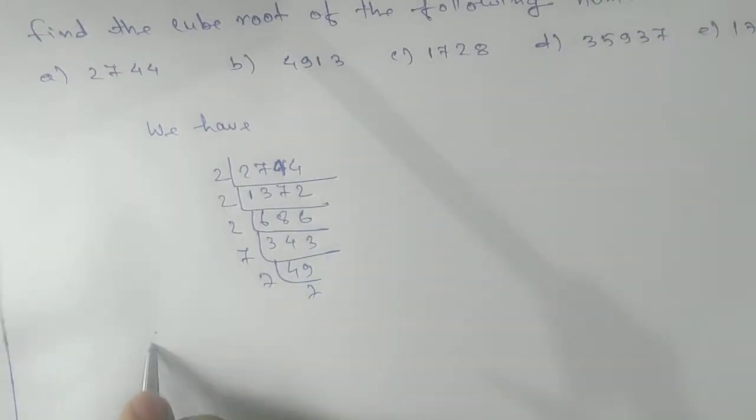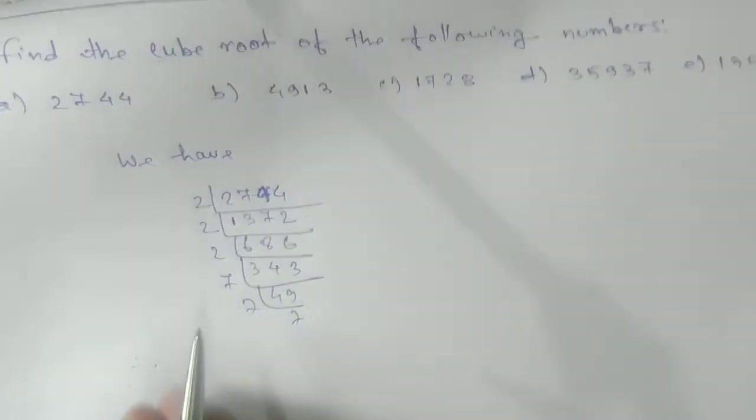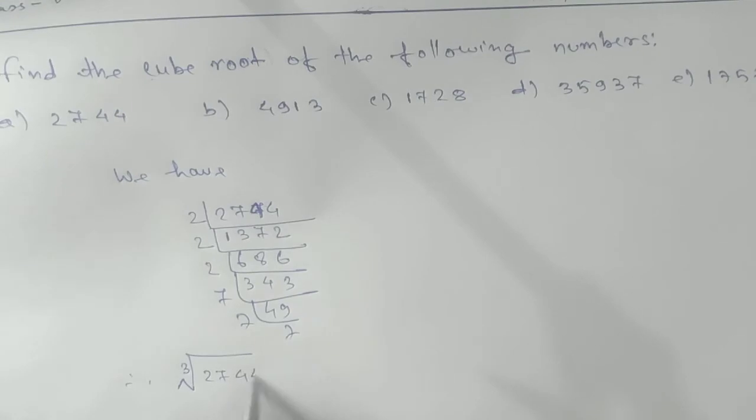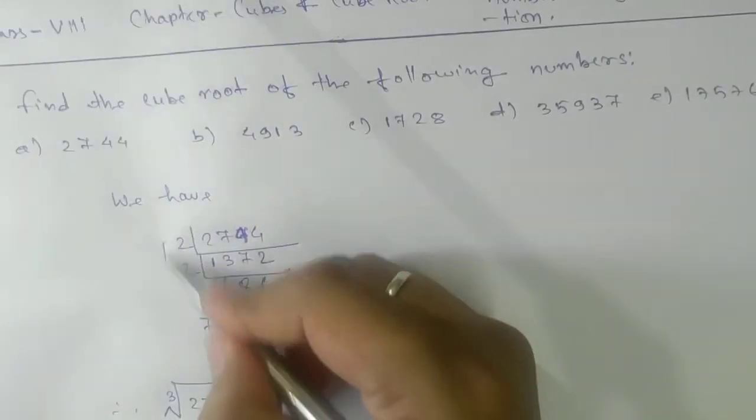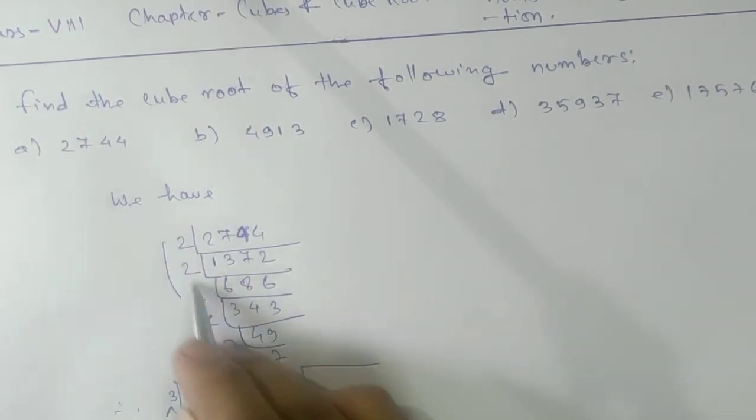So therefore it is asking you to find the cube root. So we're going to take the cube root symbol here: cube root of 27744. Next, take the pairs. Here the pairs will be in what? Cube. In cube.